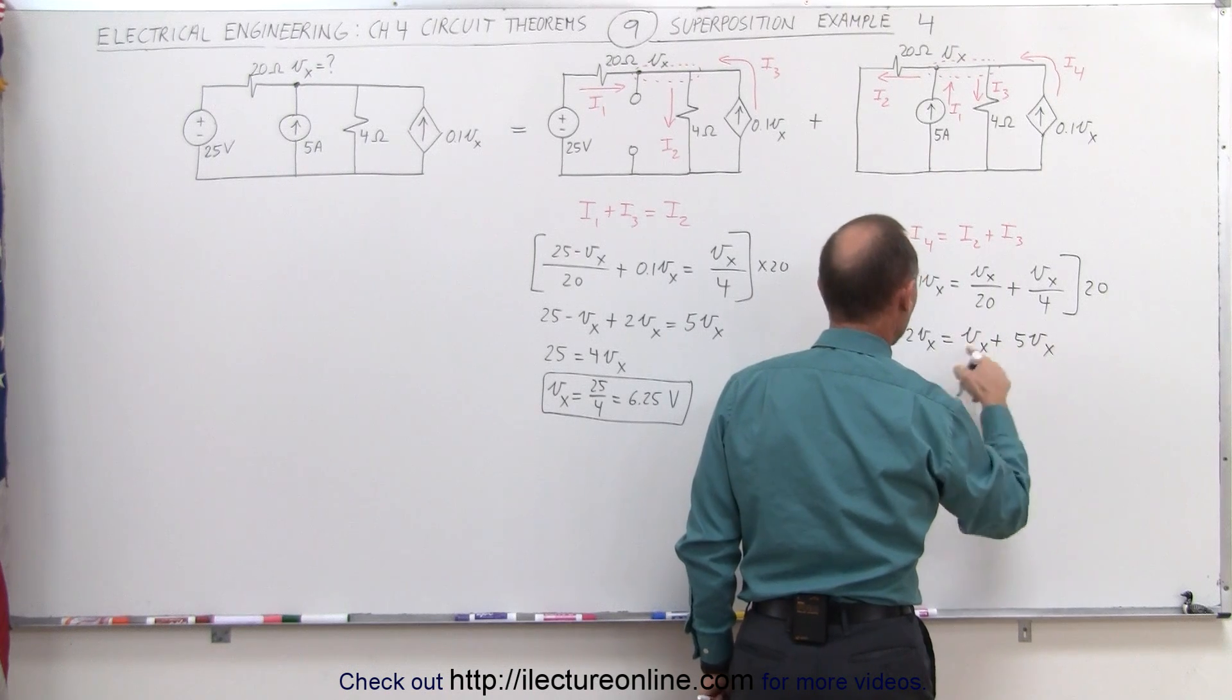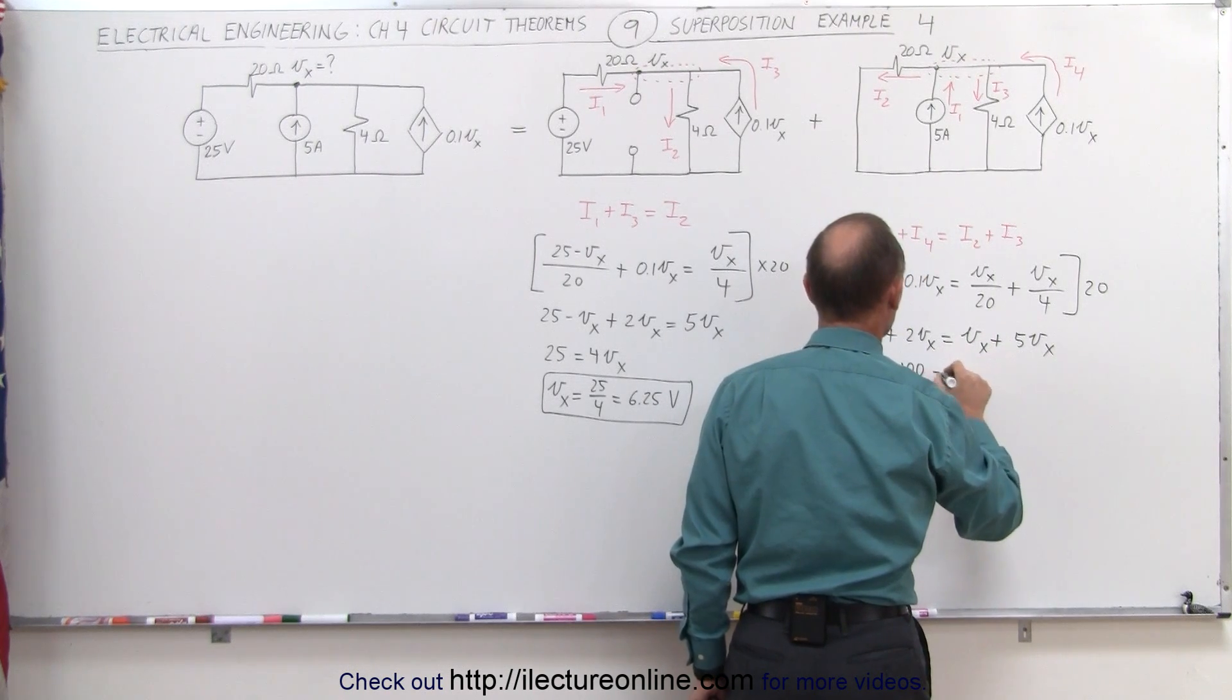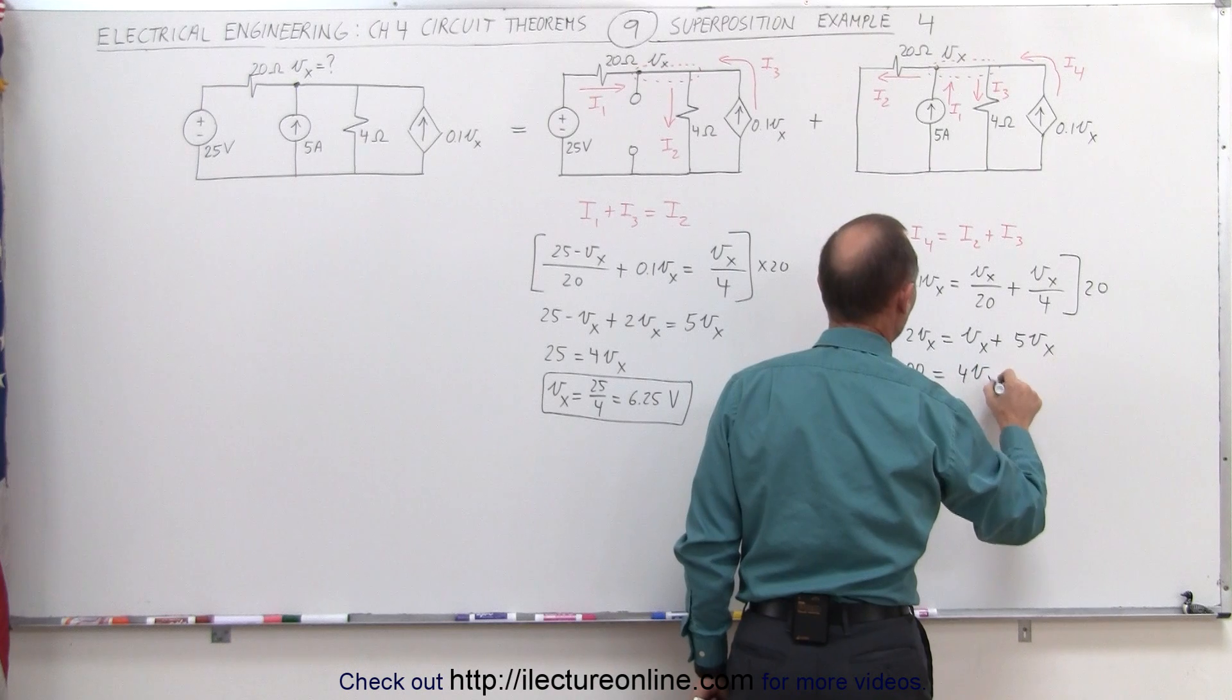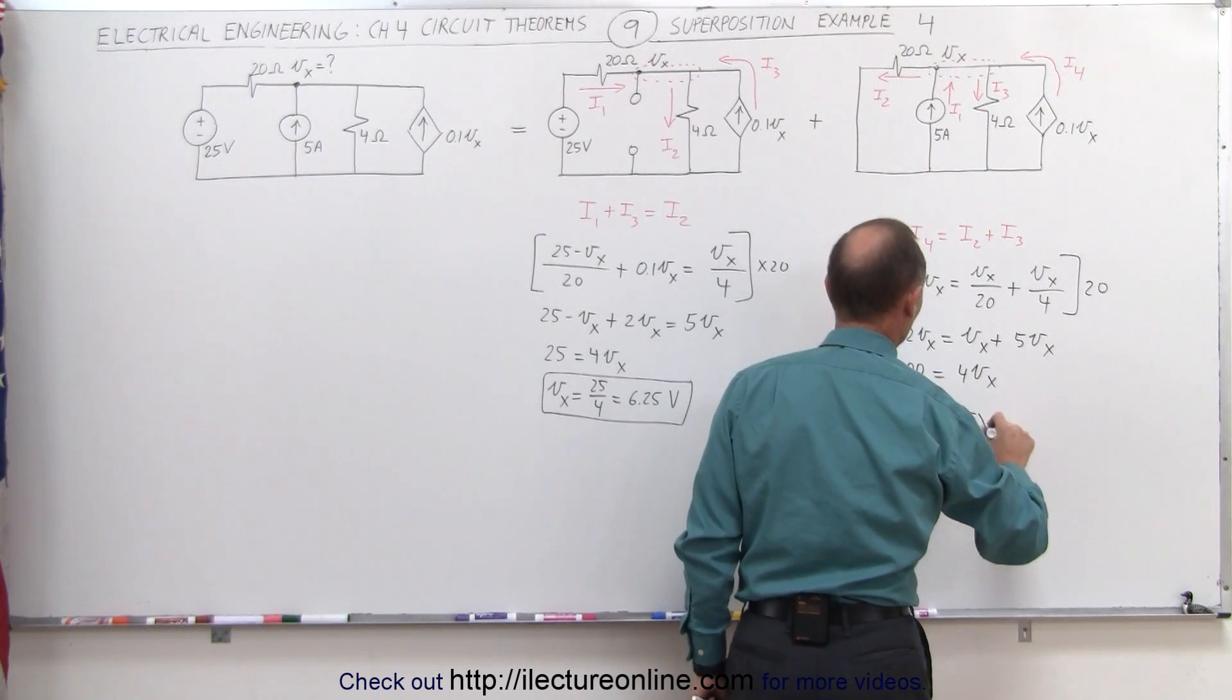We have 6 V sub X minus 2, that's 4 V sub X, 100 equals 4 V sub X. V sub X equals 25 volts.